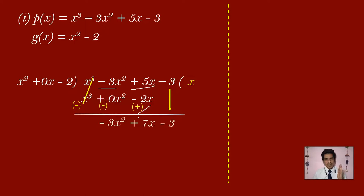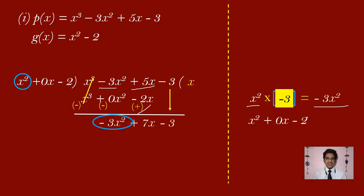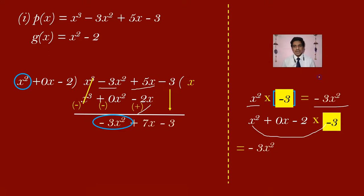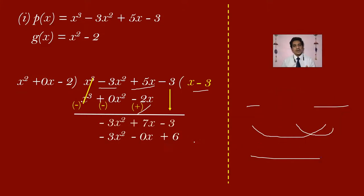The remaining dividend's first term is minus 3x square, and the divisor's first term is x square. x square multiplied by minus 3 gives minus 3x square. So multiply the whole divisor x square plus 0x minus 2 by minus 3: x square into minus 3 gives minus 3x square, 0x into minus 3 gives 0, and minus 2 into minus 3 gives plus 6. Write minus 3 in the quotient.